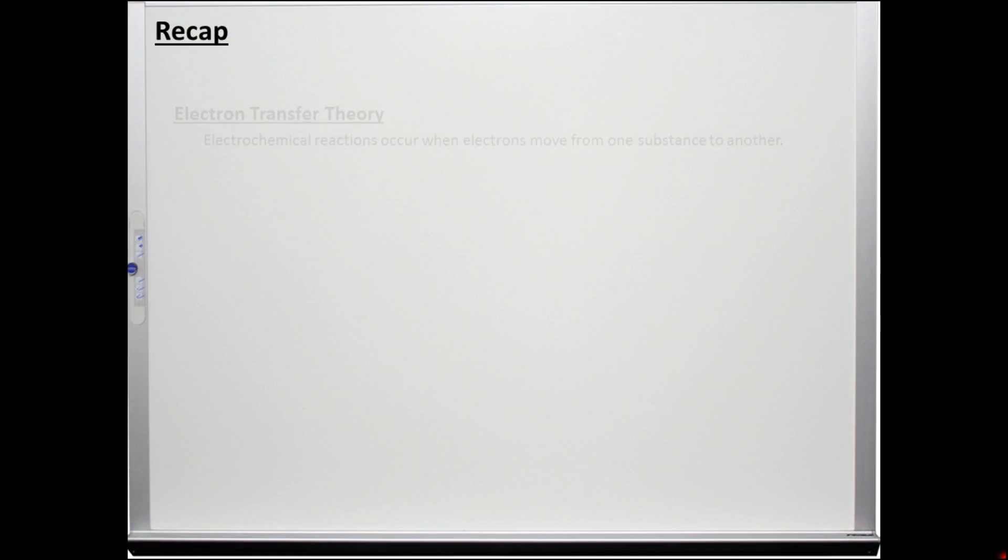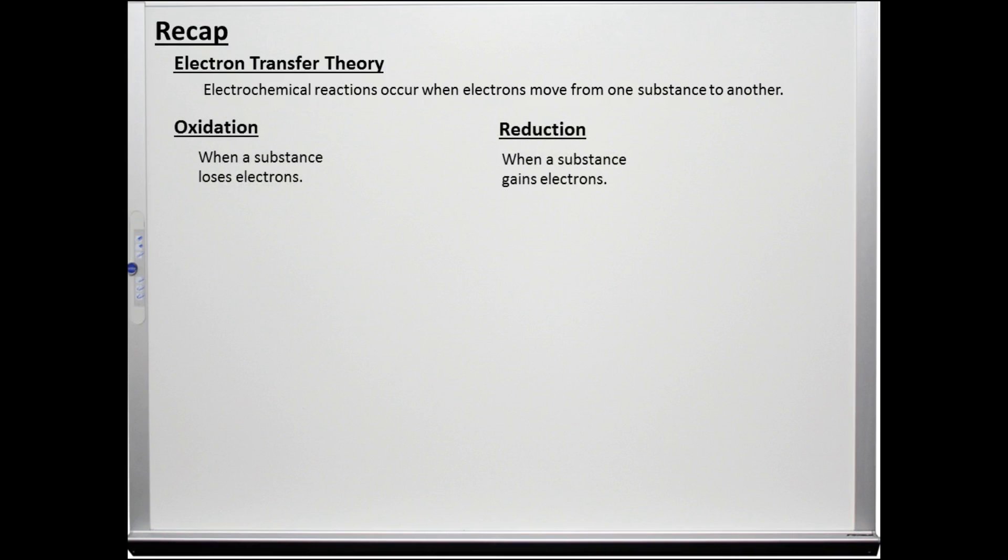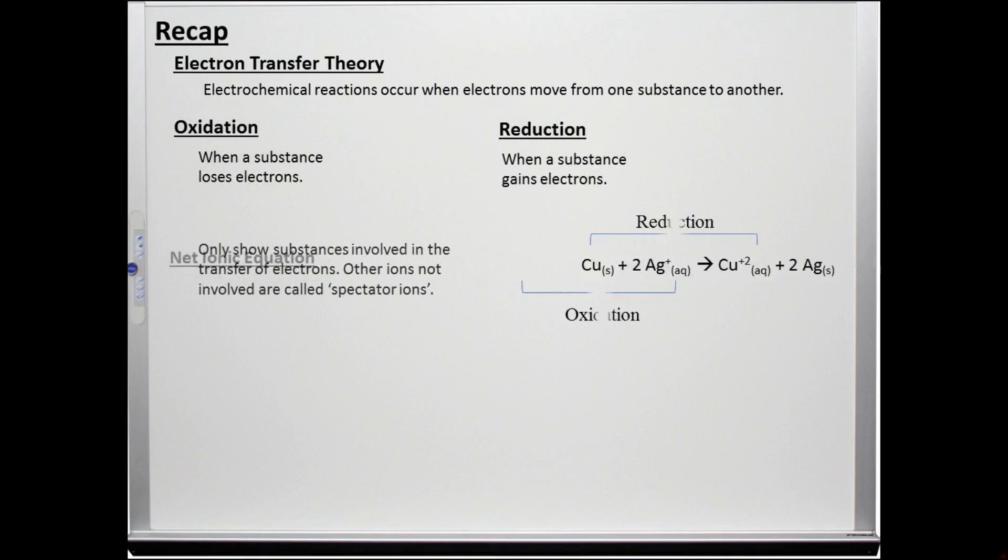So to recap, the electron transfer theory describes the transfer of electrons as a possible mechanism for electrochemical reactions. The substances that lose electrons are oxidized while the substances that gain electrons are reduced. Balancing the electrons lost and gained in the half-reactions yields the sum of these equations called the net ionic equation.